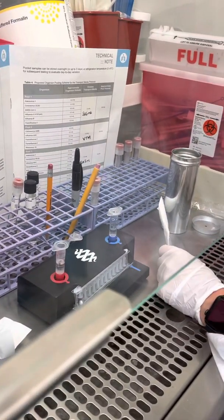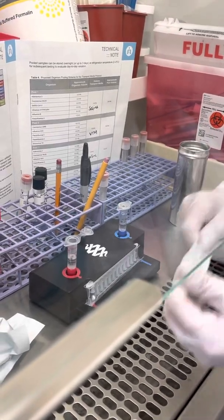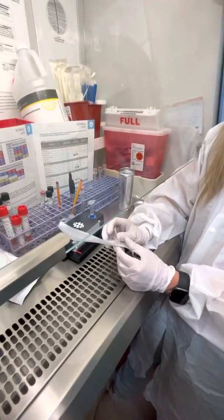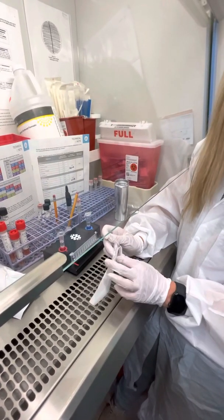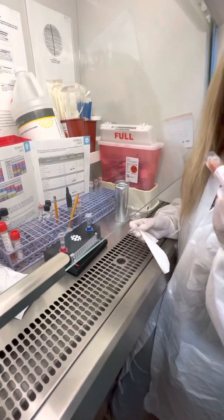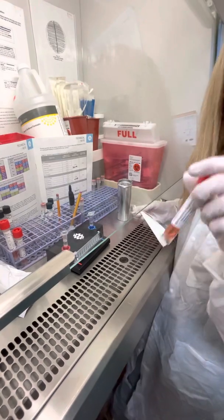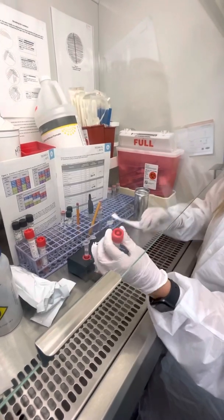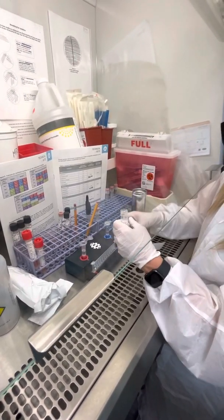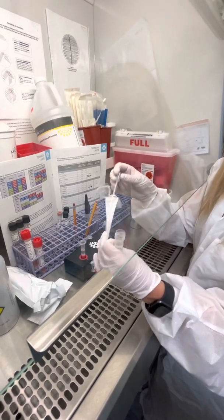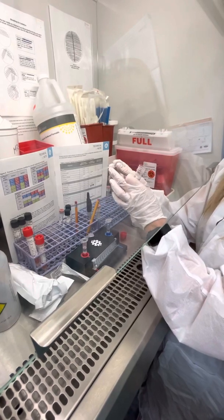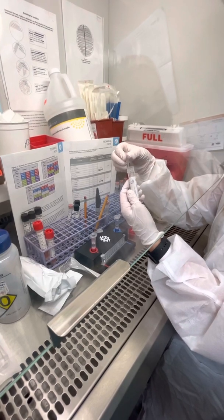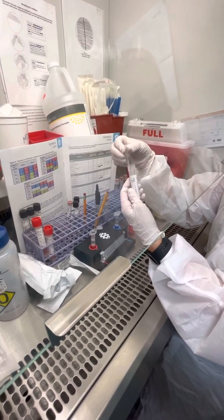Next is your sample. Your sample should be a nasopharyngeal swab in viral transport or saline. Let's pretend that this is a nasopharyngeal swab in my viral transport. You can vortex it or invert really well. Respiratory requires 300 microliters, so you're going to draw up to that third line on your pipette.